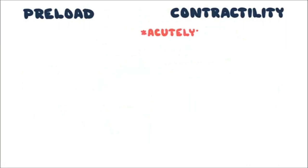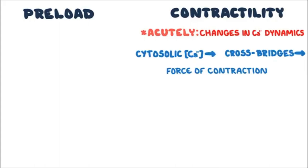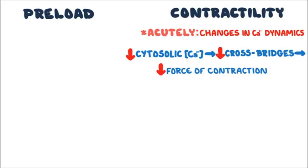Under acute conditions, the change in contractility is because of changes in calcium dynamics. More free calcium in the cytosol means more cross-bridges will cycle, increasing the force of contraction at the given preload. Less free calcium in the cytosol means less cross-bridges cycle, decreasing the force of contraction at the given preload.